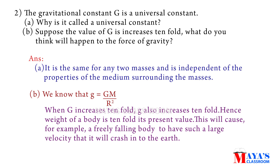Second question: the gravitational constant G is a universal constant. Why is it called a universal constant? Part B: suppose the value of G increases 10-fold — what do you think will happen to the force of gravity?